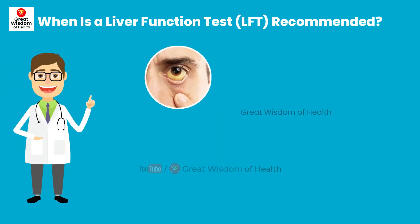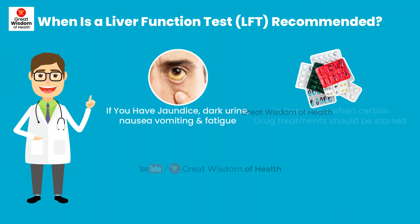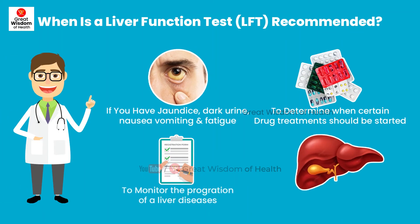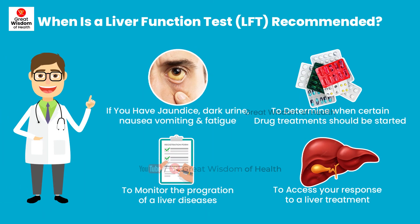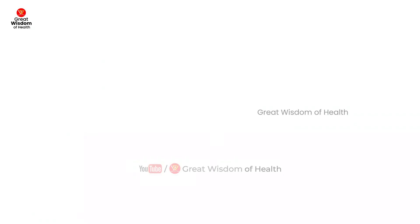Roles of ALT and AST. The ALT enzyme is mainly found in the liver and helps convert proteins into energy for the liver cells. When the liver is damaged, this enzyme is released into the bloodstream and enzyme levels can increase as a result of liver disease.